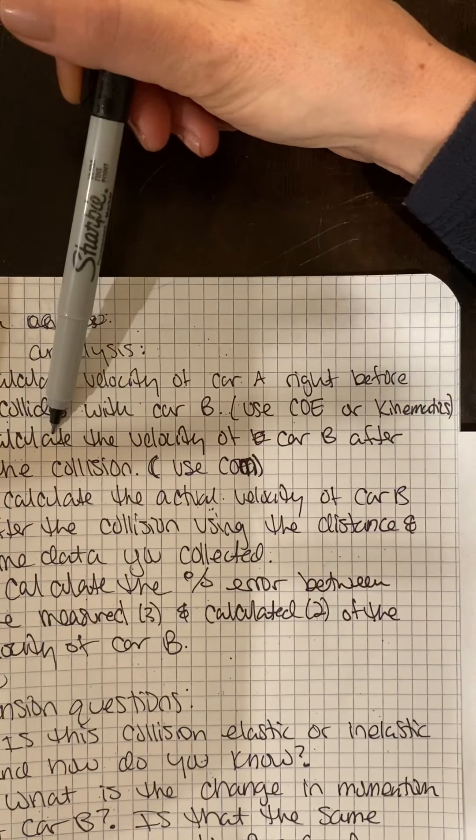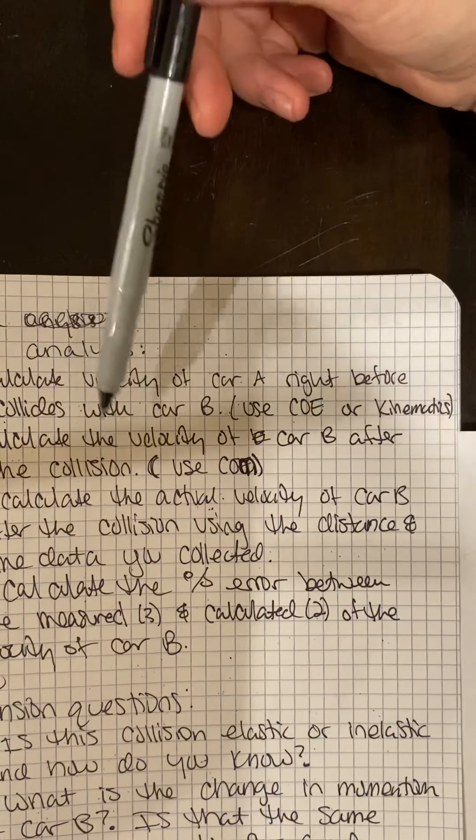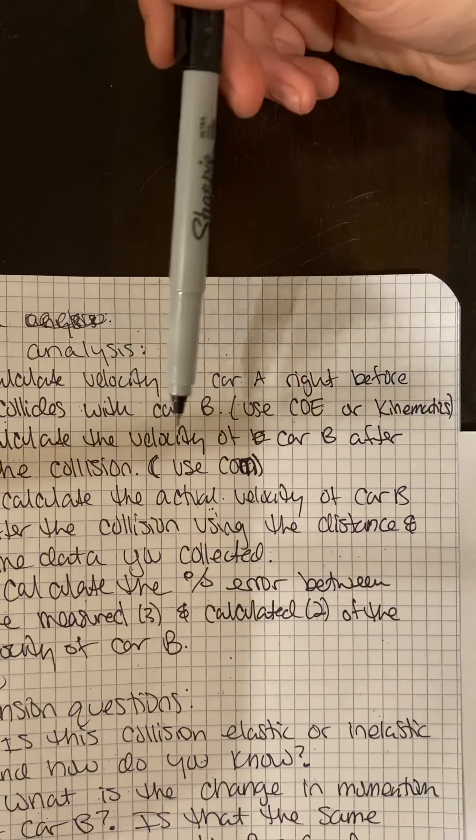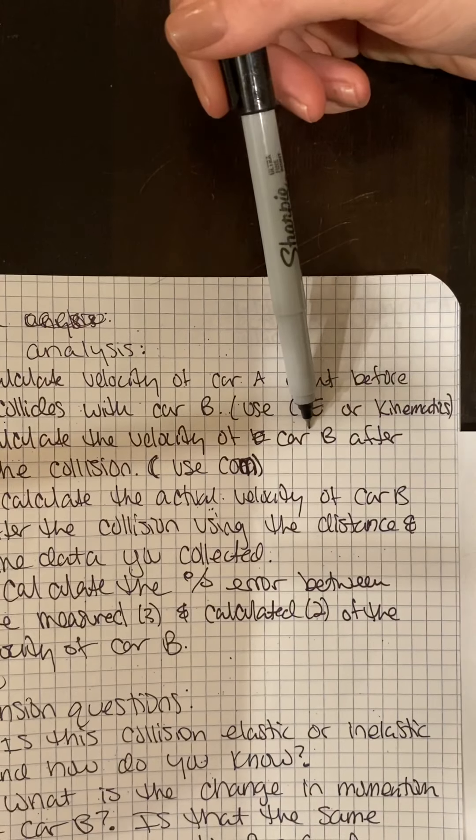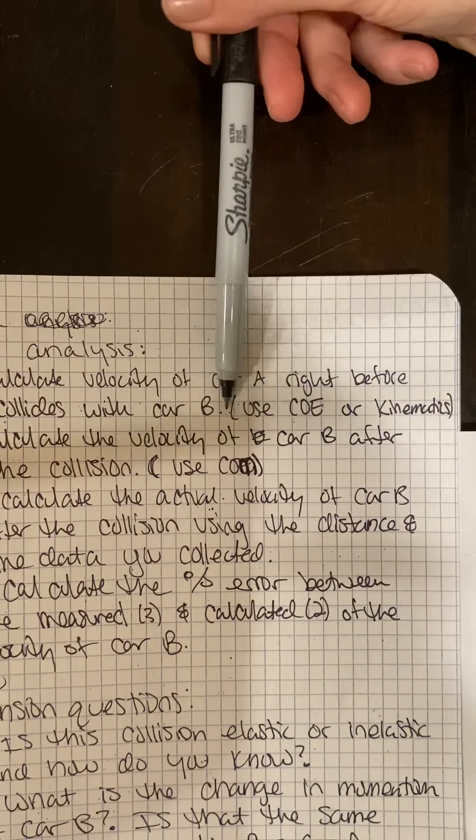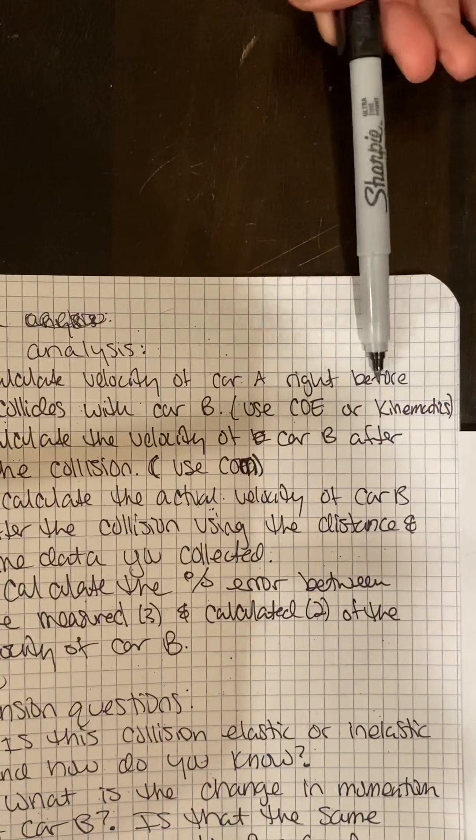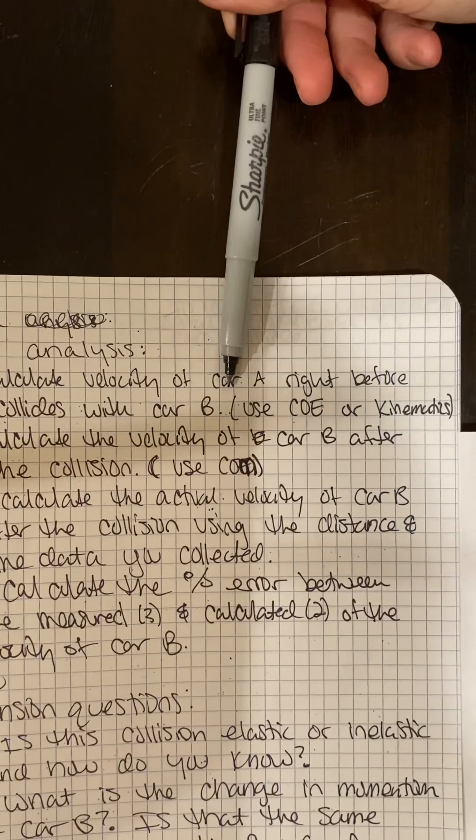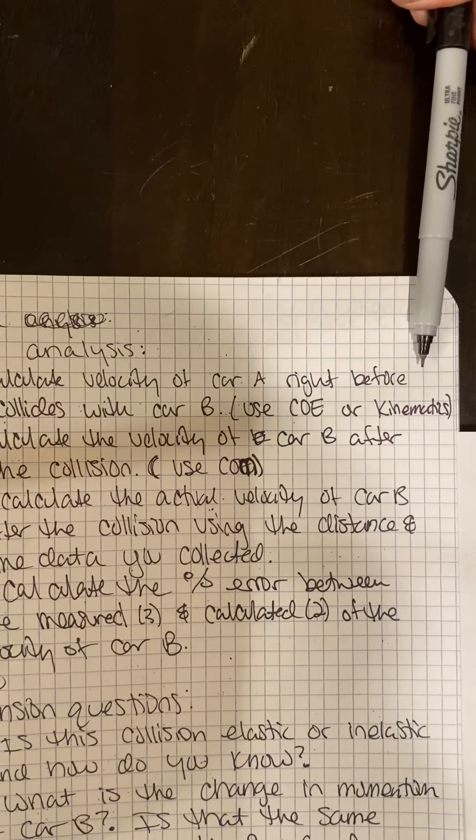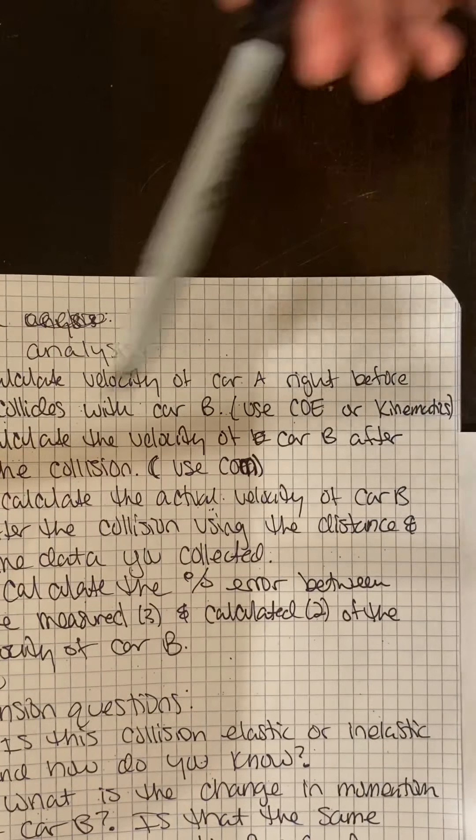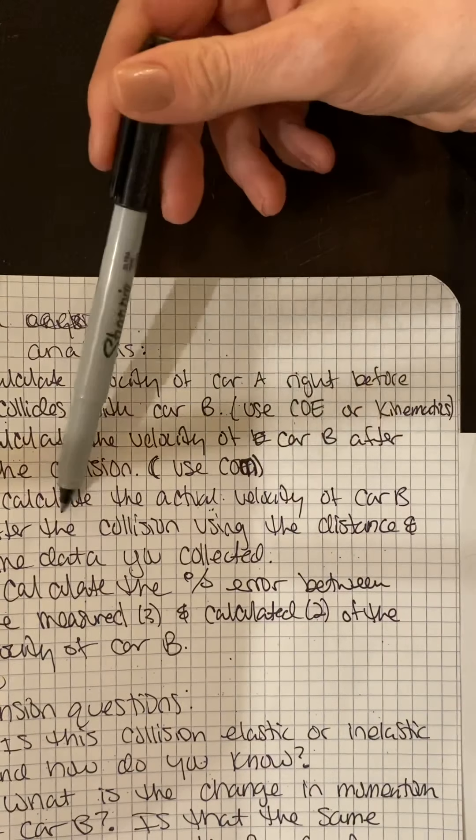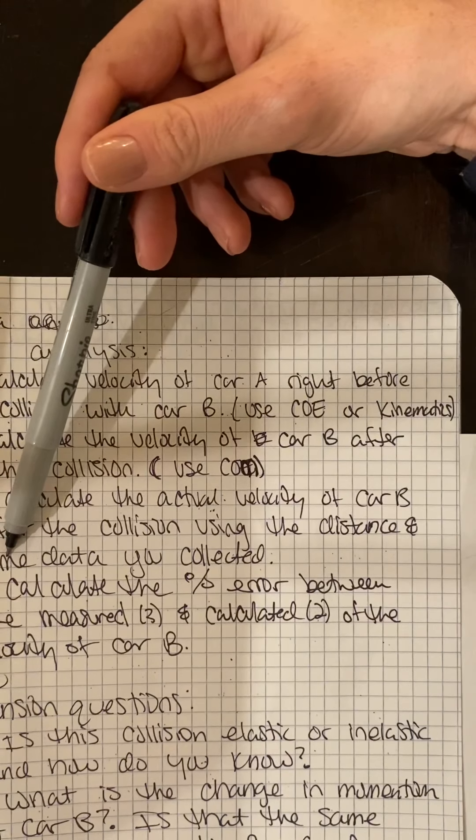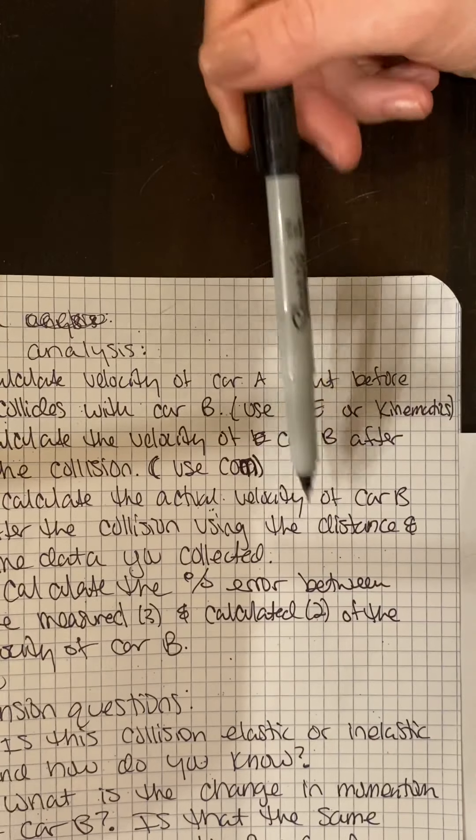Calculate the velocity of car B after the collision. So once they collide and they're going to be moving together, they're going to be moving with the same velocity. Calculate the actual velocity of car B after the collision using your distance, the horizontal distance and time we collected. So these two velocities should be pretty similar.